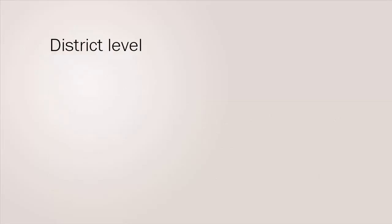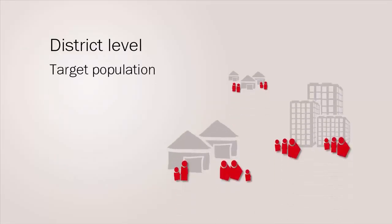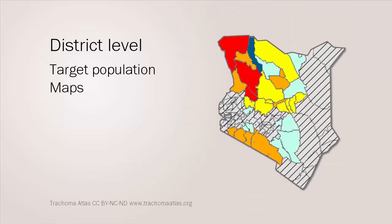At district level, the key information to gather includes the size of the target population the eye unit serves and the kinds of people that make up the population. For example, young or old, male or female, rich or poor. Maps of how the population is distributed and of people's access to healthcare. These can highlight previously unknown challenges of geography and infrastructure.